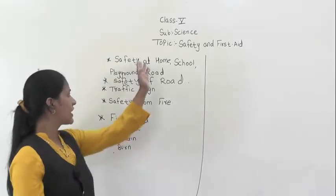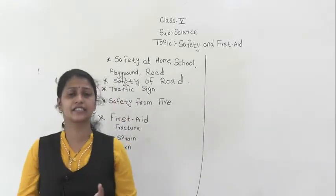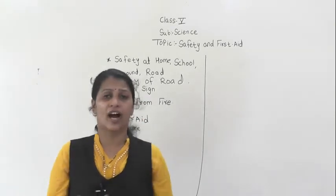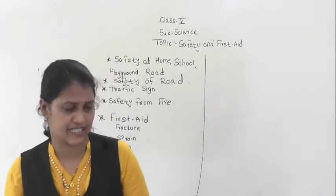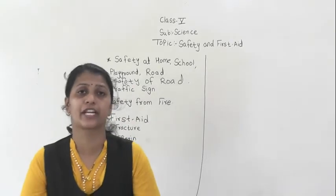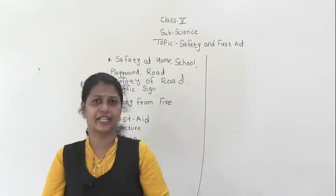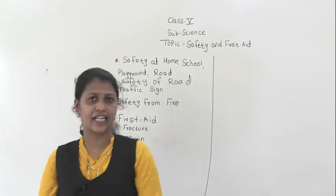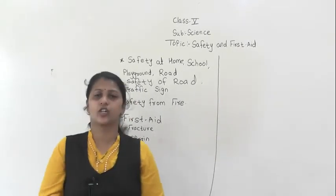What is meant by safety? Accidents can occur at any time. Why do accidents occur? They occur due to our carelessness. So we have to remain safe. Safety should be maintained at home, at school, on the playground, and wherever we go. Safety on the road is also very important. In class third, fourth, and fifth, we have learned about different types of traffic signs.